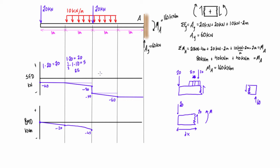In the next section, the rectangle has base 1 meter and height 50 kilonewtons, giving an area of 50. The triangle has one-half times base 1 times height 10, giving 5 kilonewton-meters. The total area is 55 kilonewton-meters. Starting from minus 45 and dropping 55, we reach minus 100 kilonewton-meters. Because the shear line has a slope in this section, the bending moment curve is parabolic.